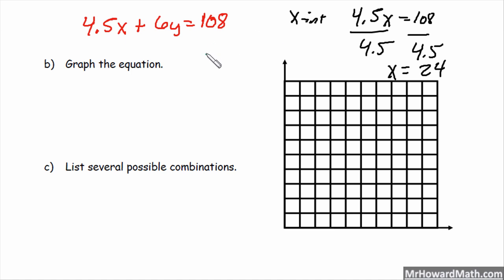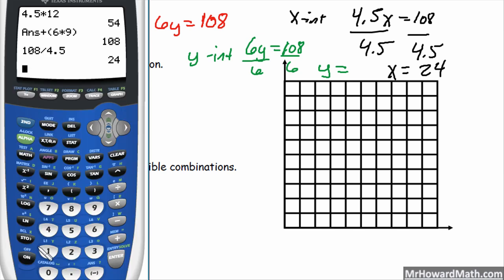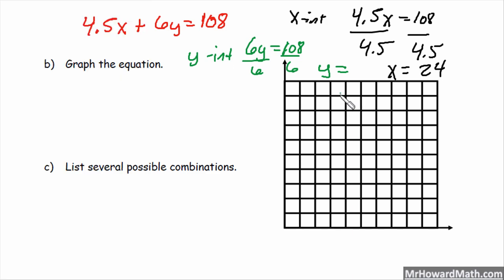To find the y-intercept, we set x to 0. So basically, cover it up and solve for y. So 6y equals 108, so divide by 6. So we get a y-intercept equal to 108 divided by 6, which is 18. So y-intercept is 18, and x-intercept is 24.